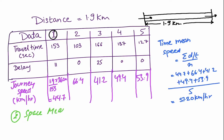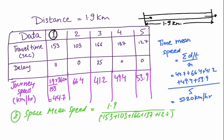Next, the space mean speed equals distance divided by average travel time. The distance is 1.9 km, and the average time is (153 + 103 + 166 + 137 + 127) divided by 5, using journey times. Converting to hours, the space mean speed comes out to be 49.85 km/h.